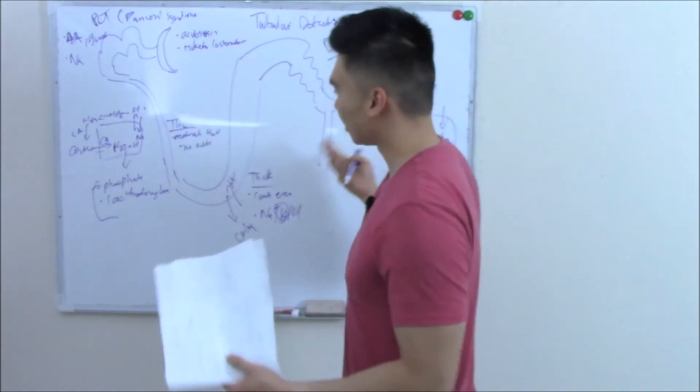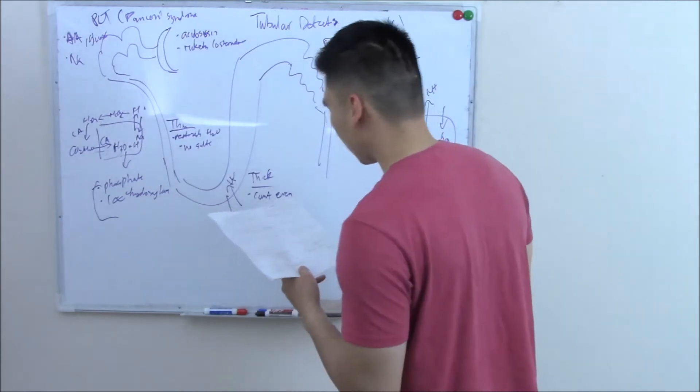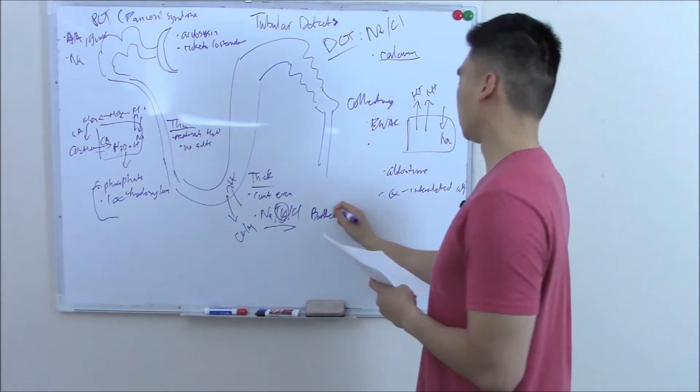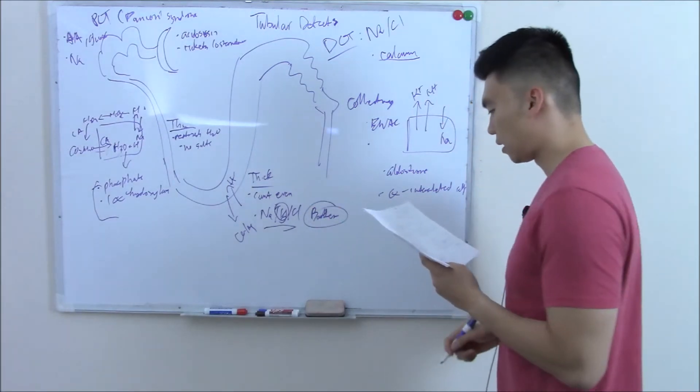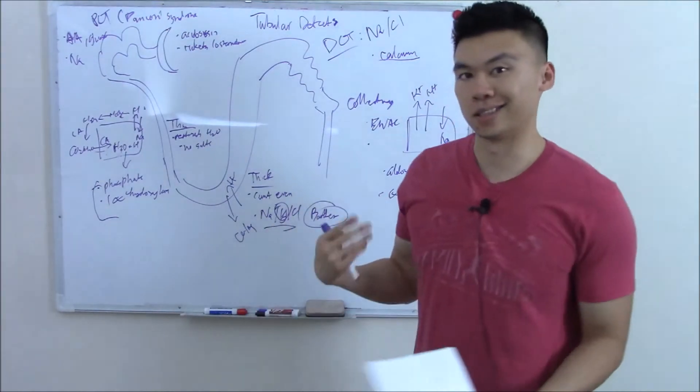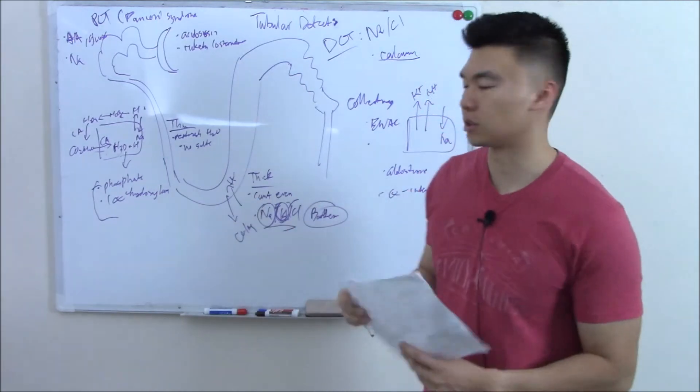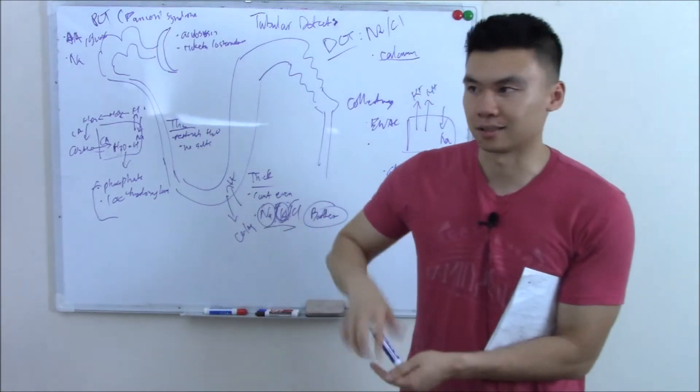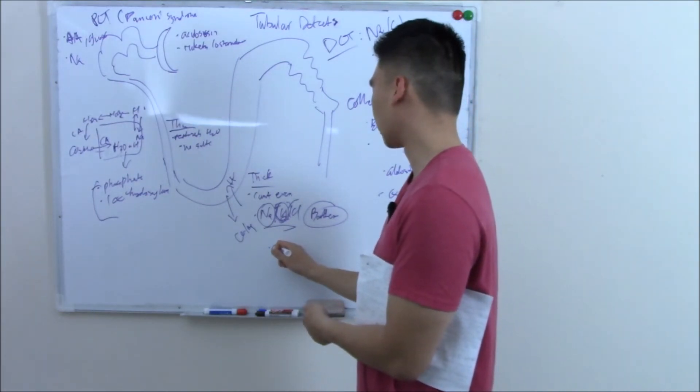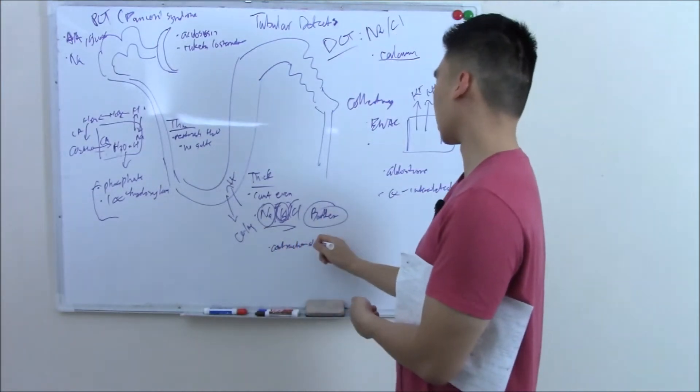Let's move on down. Thin ascending limb doesn't really have any channels. Thick ascending limb has that huge channel that we all know and love. If you knock that out, it's called Bartter syndrome. And you can imagine what that does. It's basically like getting loop diuretic all the time. So you can't reabsorb sodium, potassium, chloride. You just pee it all out. So you get hypokalemia. You're bone dry because you're just peeing all the time. Because you're peeing all the time and you're bone dry, you get contraction alkalosis. In fact, most of these you get contraction alkalosis.